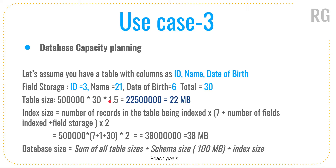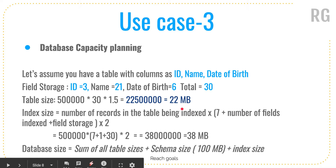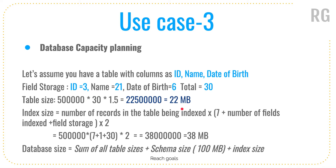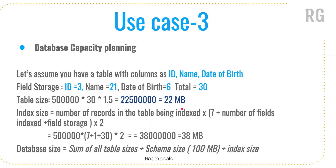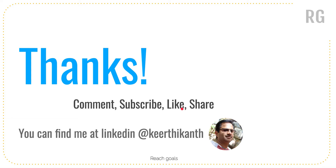There is another factor to consider: index size. If you are indexing one of the columns, you have to measure the index size using the formula: (number of records × (7 + number of fields indexed + field storage)) × 2, which comes to around 38 MB. Once you have all this information, the total database size is the sum of all table sizes, schema size, plus index size.